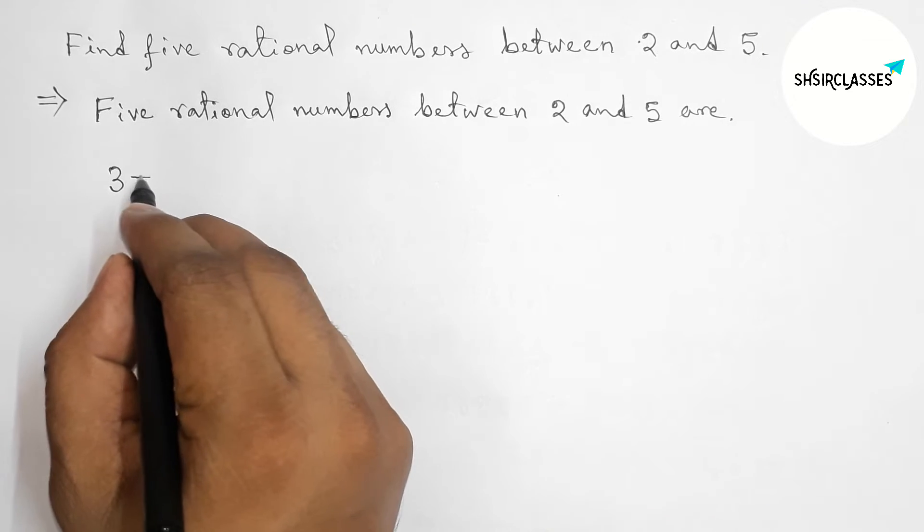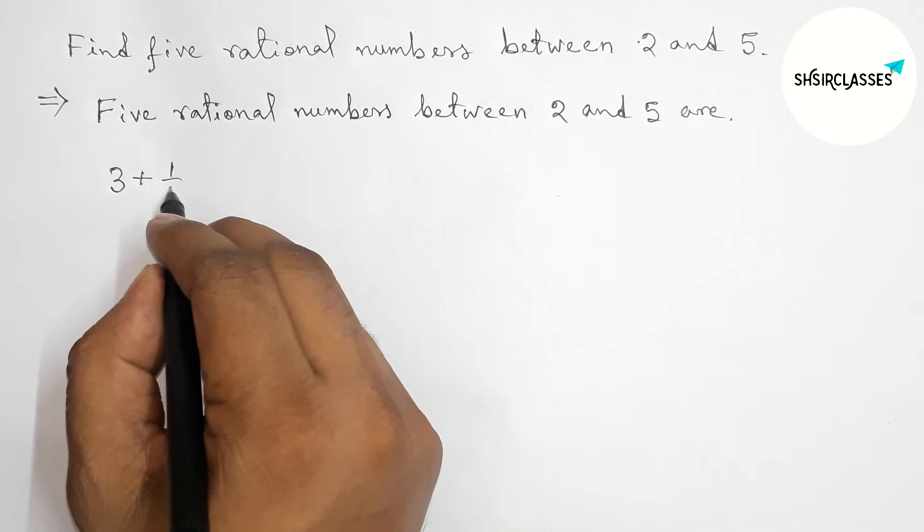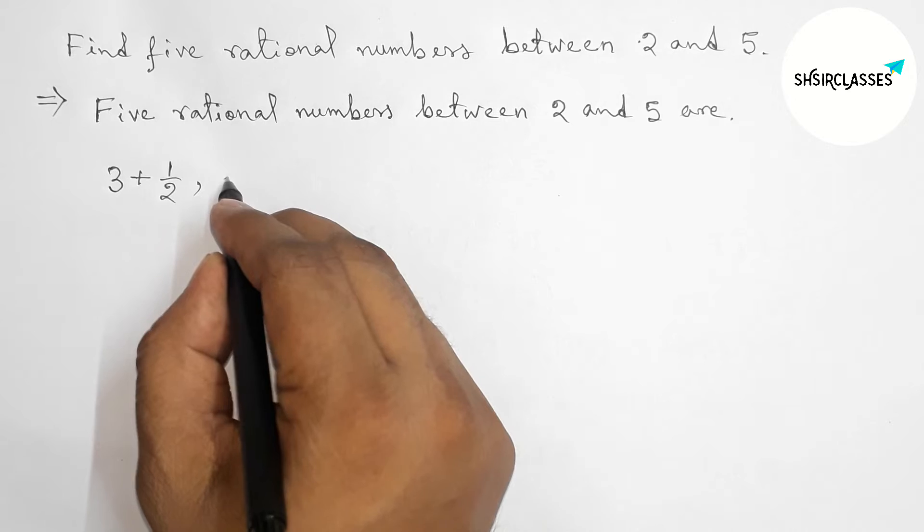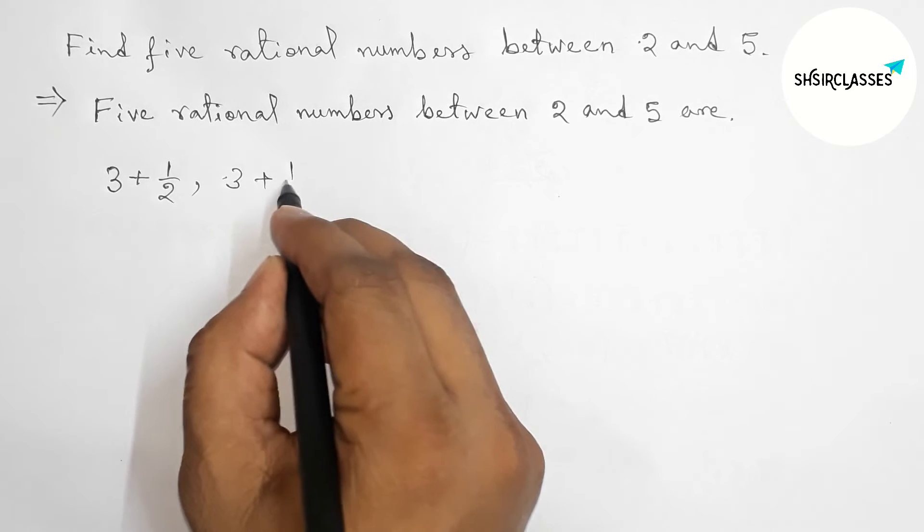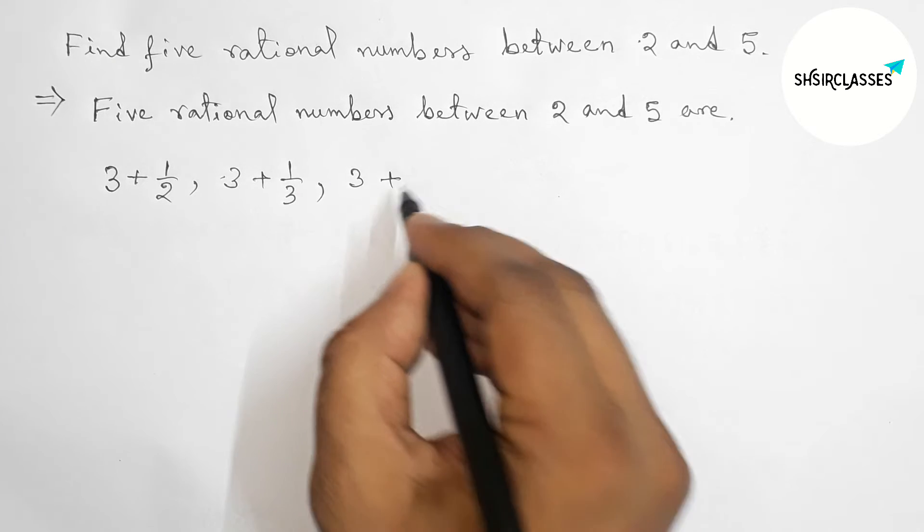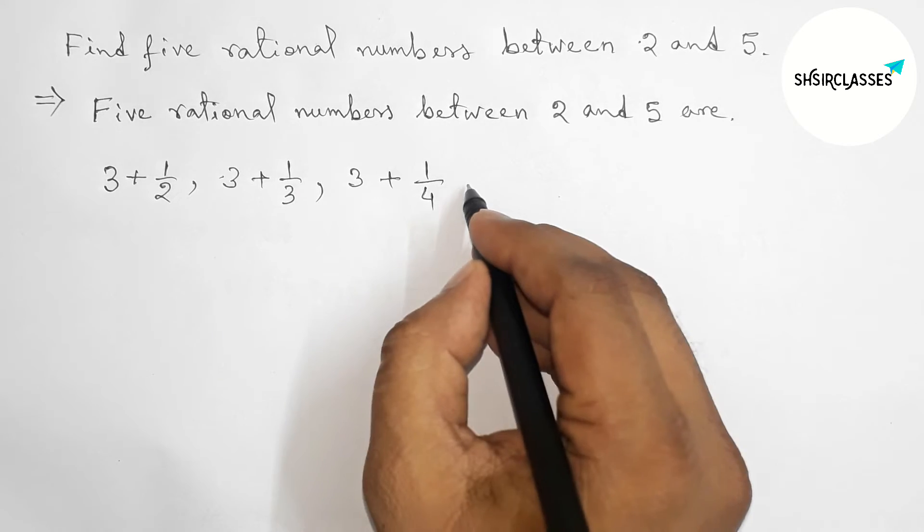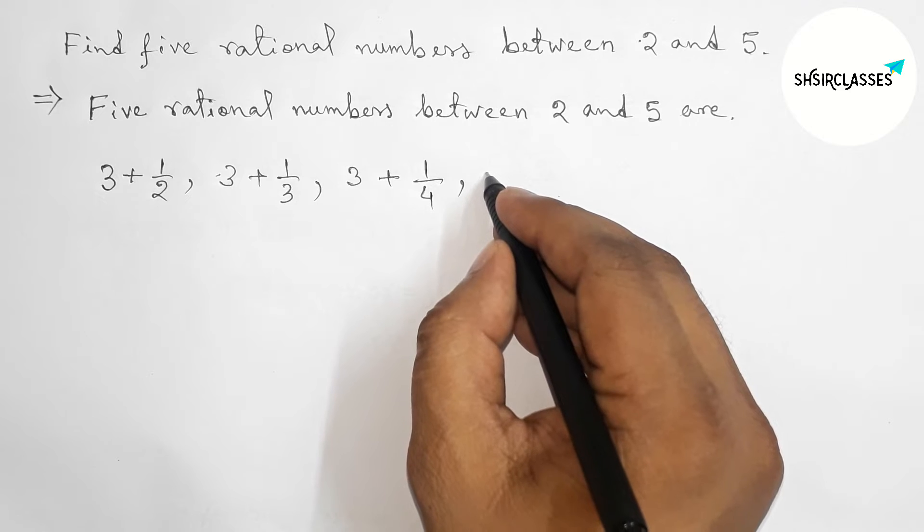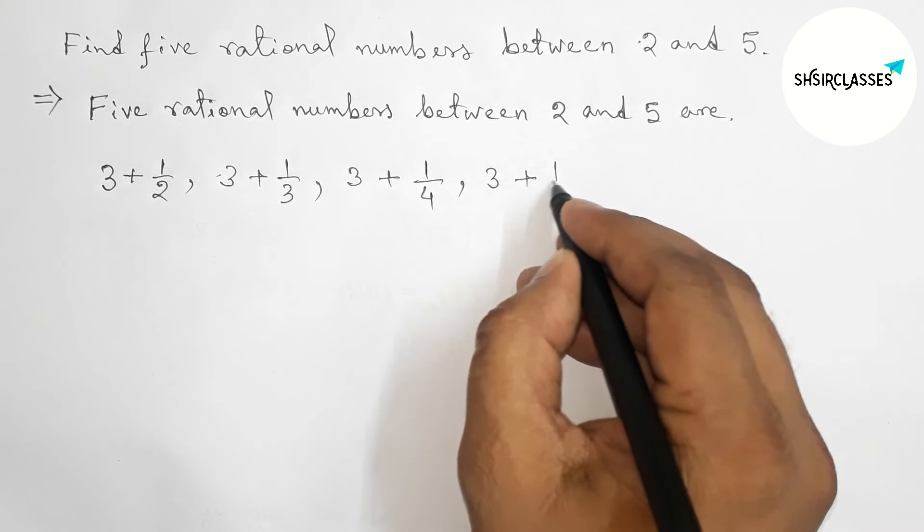Here first I'm taking 3 which is between 2 and 5, then adding 1/2. By similar way, taking 3 plus 1/3, then taking 3 plus 1/4, then taking 3 plus 1/5.